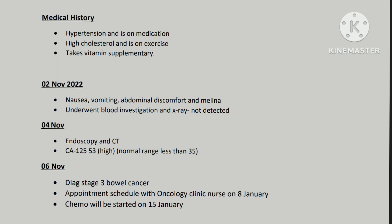There is no need to write the social history or medical history as it is a known case. You can start with how she presented: 'On 2nd November 2022, she presented with nausea, vomiting, abdominal discomfort, and malena. Although she underwent blood investigation and X-ray, nothing was detected.' Thereafter, she underwent endoscopy and a CT scan on 4th November. In addition, CA-125 was found to be elevated at 53, which consequently confirmed the diagnosis.